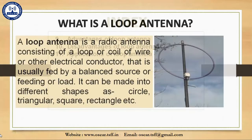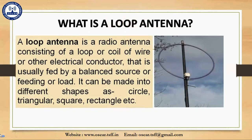A loop antenna is a radio antenna consisting of a loop or coil of wire or other electrical conductor that is usually fed by a balanced source or feeding or load. It can be made into different shapes such as circle, triangle, square, rectangle, etc. When we talk about loop antenna, it simply means a conductor in a loop made by a simple wire.